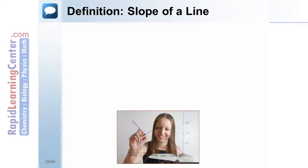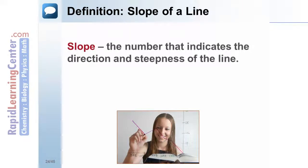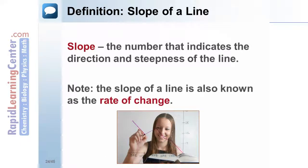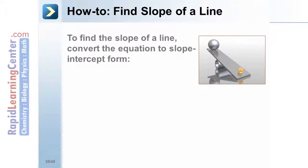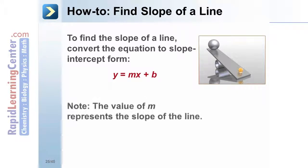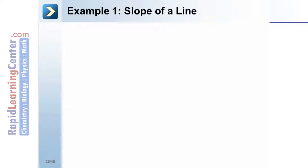Definition — slope of a line: the slope of a line is the number that indicates the direction and steepness of the line. The slope is also known as the rate of change. To find the slope of a line, convert the equation to slope-intercept form: y equals mx plus b. The value of m represents the slope of the line.